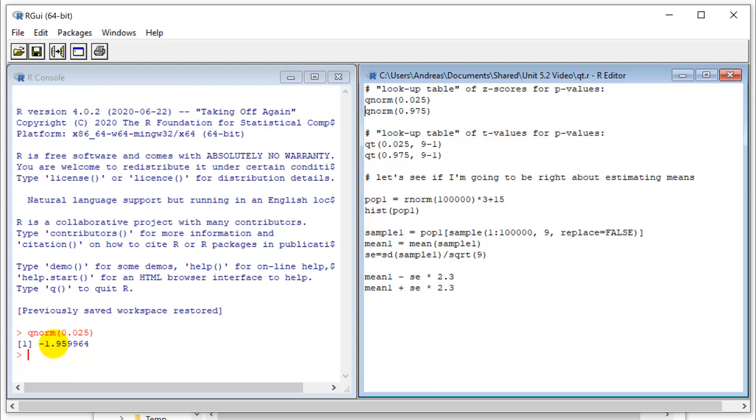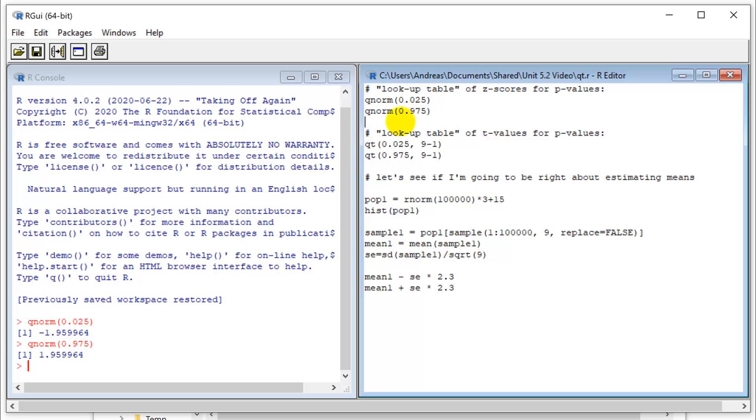So it goes from minus 1.96 to plus 1.96. So if we look at the other end, it's symmetrical. That gives me the same value positively.